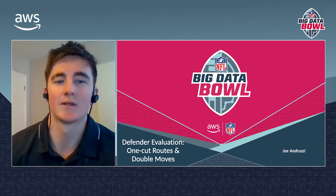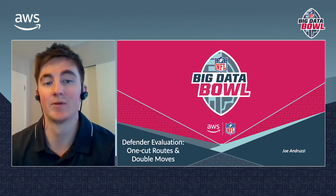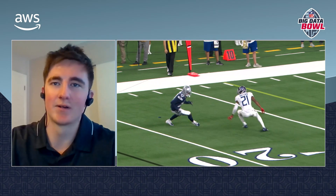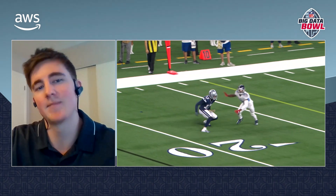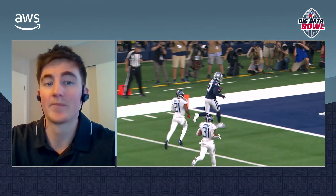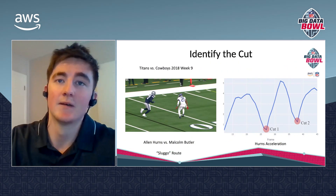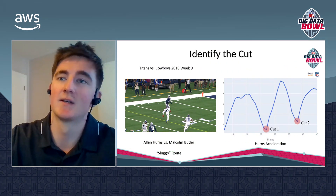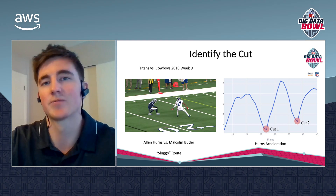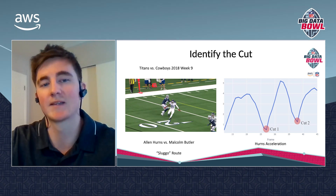My name is Julian Druze and my project is Defender Evaluation on One-Cut Routes and Double Moves. To the left you'll see Alan Hearns running a double move called a Sluggo route. He essentially makes one cut in and then makes a second cut heading straight up field, fooling the quarterback on the play. The goal of my submission was to evaluate cornerbacks on their ability to cover one-cut routes as well as double moves like this one.